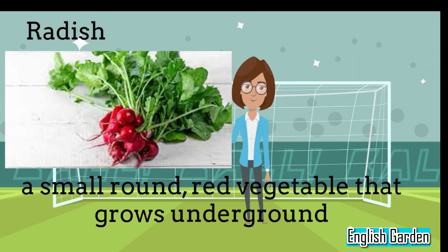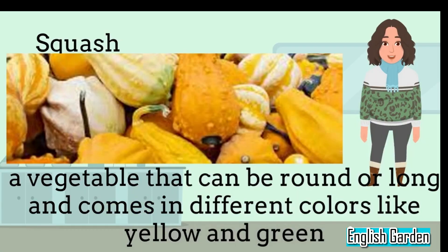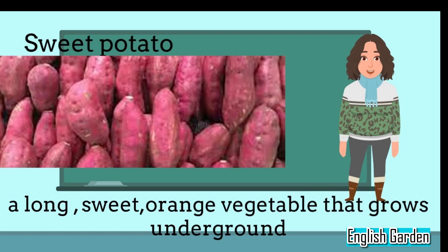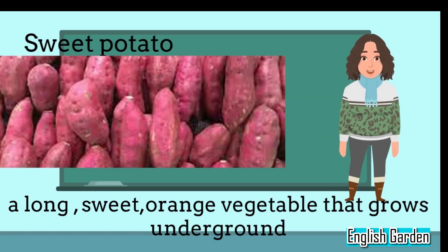Radish, a small, round, red vegetable that grows underground. Squash, a vegetable that can be round or long and comes in different colors like yellow and green. Sweet potato, a long, sweet, orange vegetable that grows underground.